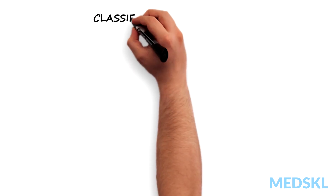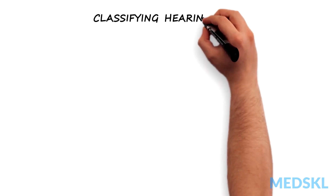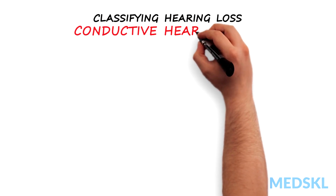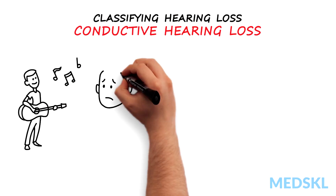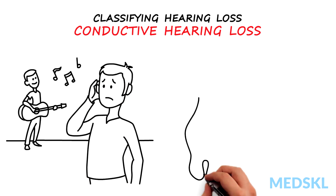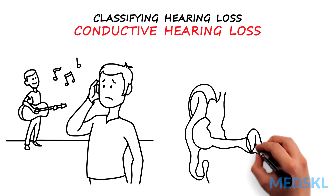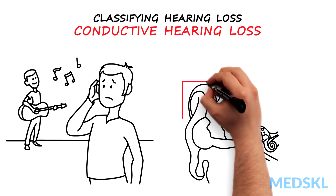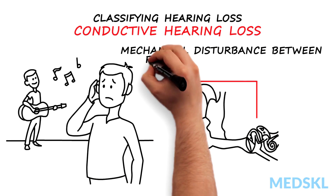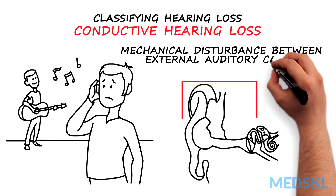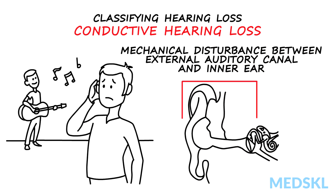We can classify hearing loss into conductive and sensorineural types. Conductive hearing loss occurs when the conduction of sound to the cochlea is interrupted by a mechanical disturbance between the external auditory canal and the inner ear.